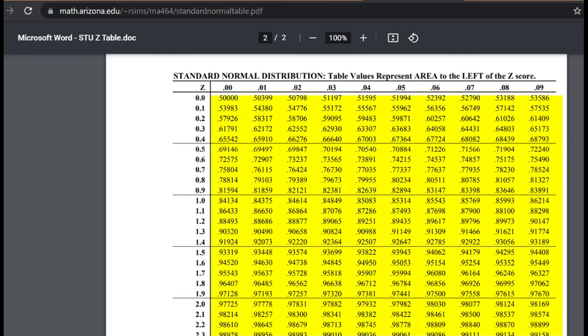The closest we can find to 95% is here, which falls on the 1.6 row, and it's in between the 0.04 and 0.05 column.